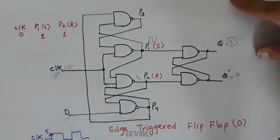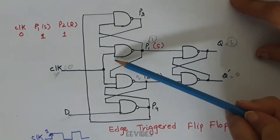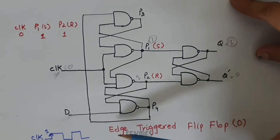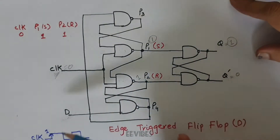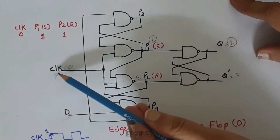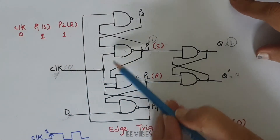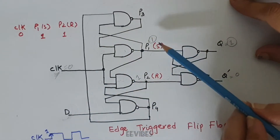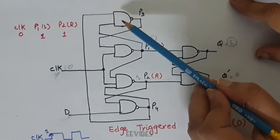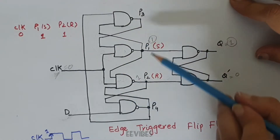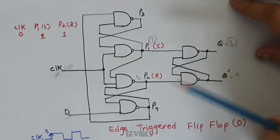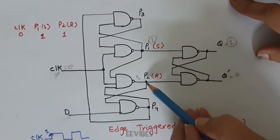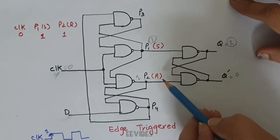Back to the circuit, we can see that we have used three SR latches for designing a single edge-triggered D flip-flop, which is the positive edge-triggered flip-flop. This clock signal is common to both these NAND gates, and here is the input D. I have marked the output of each NAND gate at the first stage as P1, P2, P3, and P4. Here P1 represents the set input S, while P2 represents the reset input R.